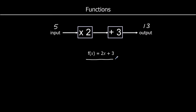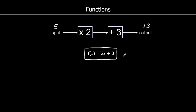Here we're going to rewrite these machines in a different way, using a different notation. So this says a function of x, or f of x, is equal to 2x plus 3. And that is the same as this function machine up here. So instead of writing it out like a function machine, we're writing f(x) = 2x + 3. It means the same thing.